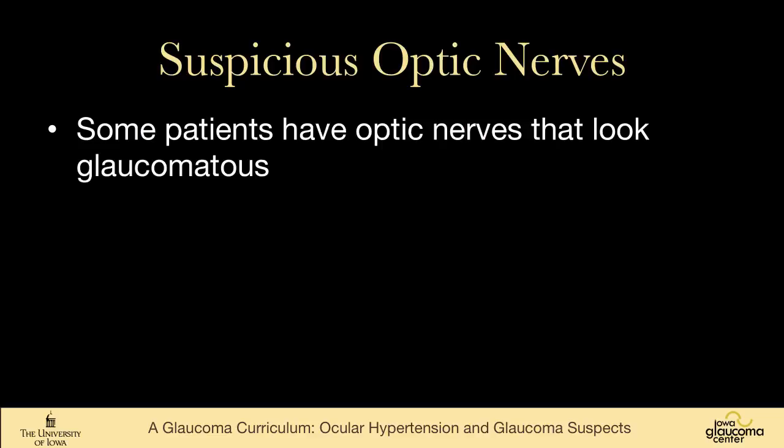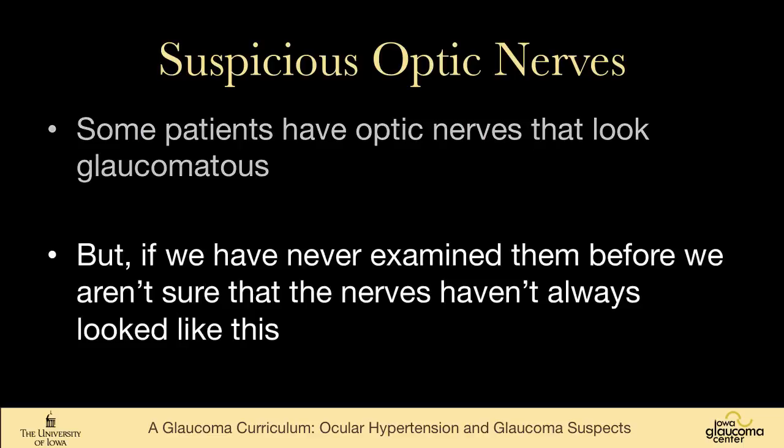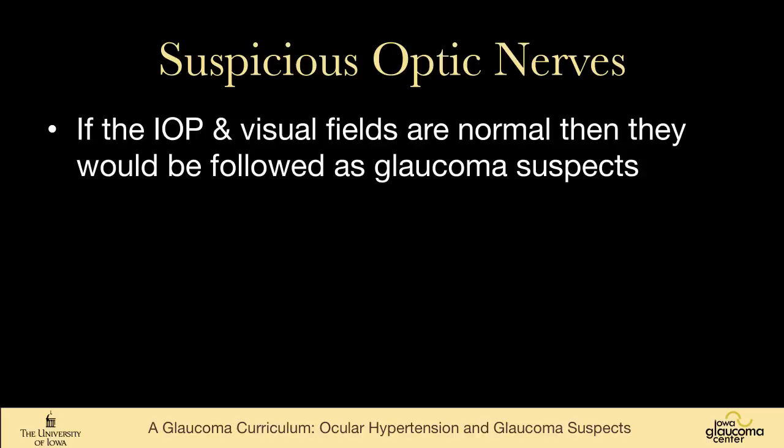Besides ocular hypertension, there are other glaucoma suspect patients — patients whose nerves look glaucomatous. But if we've never seen them before, we're really not sure that the nerves haven't always looked like this. We're all born with nerves that are different, and one can have a very large or very small cup-to-disc ratio at baseline. If the pressure and the fields are normal, these patients are typically photographed and then followed as glaucoma suspects.